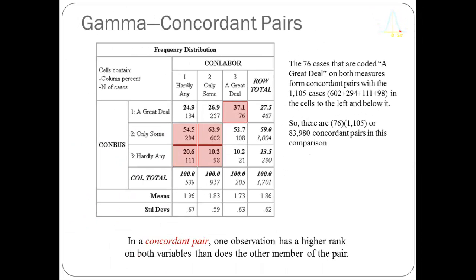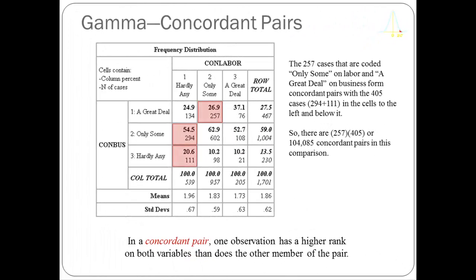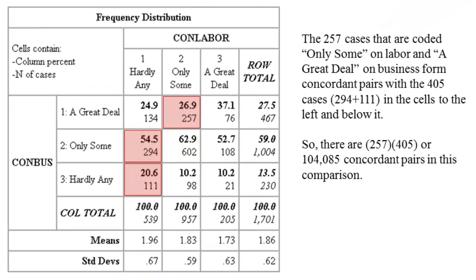We have to systematically work through the table to find all other concordant pairs. Sliding one cell to the left, we look at the 257 people who had only some confidence in labor but a great deal of confidence in business. They are concordant with the 405 people in the cells below and to the left (294 plus 111). Multiplying those together gives us 104,085 concordant pairs for that comparison.